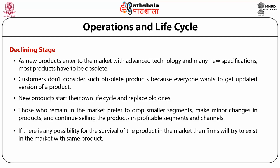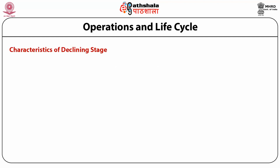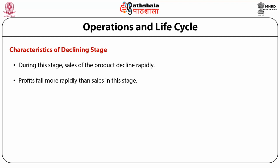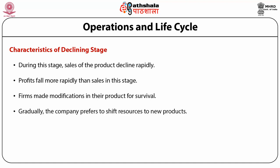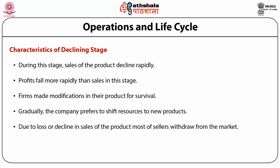Those who remain in the market prefer to focus on smaller segments, make minor changes to the product, and continue selling in profitable segments and channels. If there is any possibility for the survival of the product, firms will try to remain in the market with the same product or make some changes for survival. Characteristics of the declining stage: sales decline rapidly; profit falls more rapidly than sales; firms make modifications for survival; companies shift resources to new products; most sellers withdraw from the market due to loss or declining sales; and promotion expenses are reduced to realize some profit.